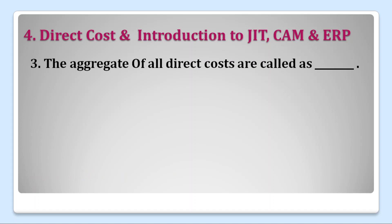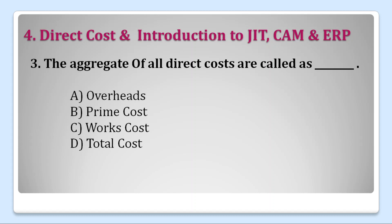Question three: the aggregate of all direct costs are called as — options are: A. Overheads, B. Prime Cost, C. Works Cost, or D. Total Cost. The aggregate of all direct costs is called Prime Cost, and the aggregate of all indirect costs is called Overheads. Right answer is B. Prime Cost.